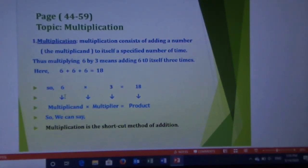So, we can write 6 multiply 3 equal 18. Here, 6 is multiplicand, 3 is multiplier and 18 is product. So, we can say multiplication is the shortcut method of addition.